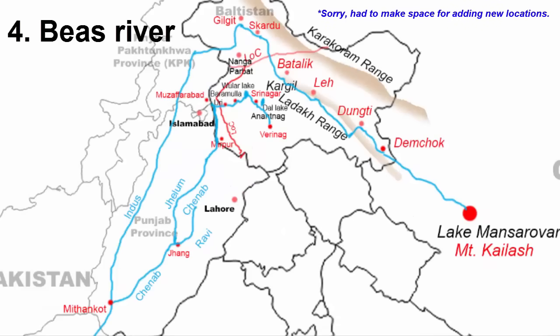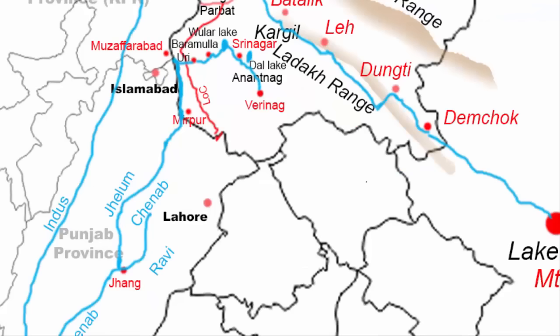The fourth river is the Beas. It originates in the upper Himalayas from the Beas Kund near Solang valley in Himachal Pradesh. The river starts off heading south and passes through the towns of Manali and Kullu. It continues to flow south for about 25 km, then takes a western course and flows west for another 20 km until it reaches Pandoh Dam on the Beas River. From here, the river takes a north-western turn, flows about 10 km, then turns west to reach the district of Mandi.